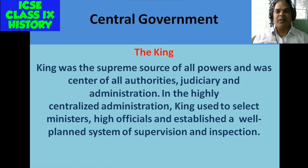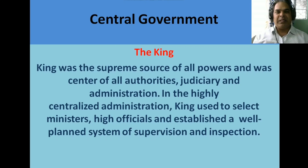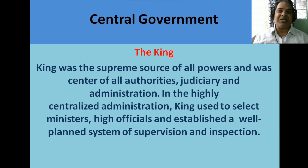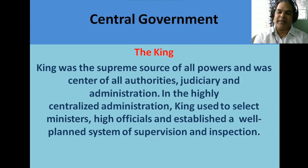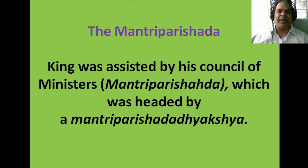The entire structure of the Mauryan administration was headed by the central government. The king was the supreme source of all powers and was the center of all authority — judiciary and administration. In this highly centralized administration, the king selected ministers and high officials and established a well-planned system of supervision and inspection. All powers were centralized in the hands of the king.